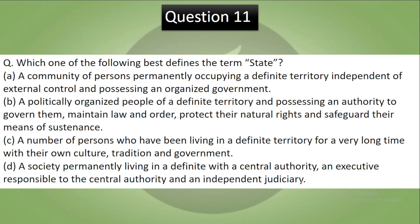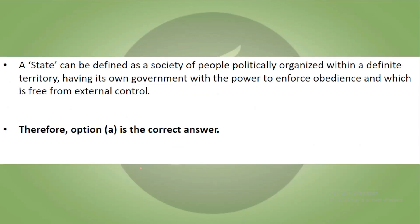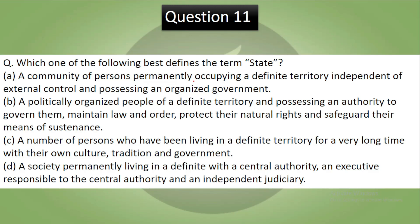The correct answer is A. A state can be defined as a society of people politically organized within a definite territory, having its own government, independent of external control, and possessing an organized government.